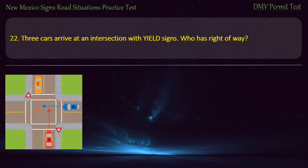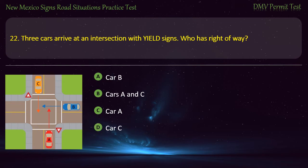Question 22. Three cars arrive at an intersection with yield signs. Who has right-of-way? Options: Car B; Car A; or Car C. Answer: Car A.